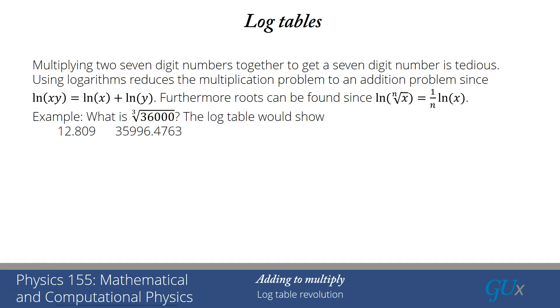On the left-hand side would be the step, which I've written as 12.809. It would actually be the 12,809th step. And here would be the 12,810th step. And you can see on the right-hand side are the actual numbers themselves. You can see 36,000 lies in between those two.